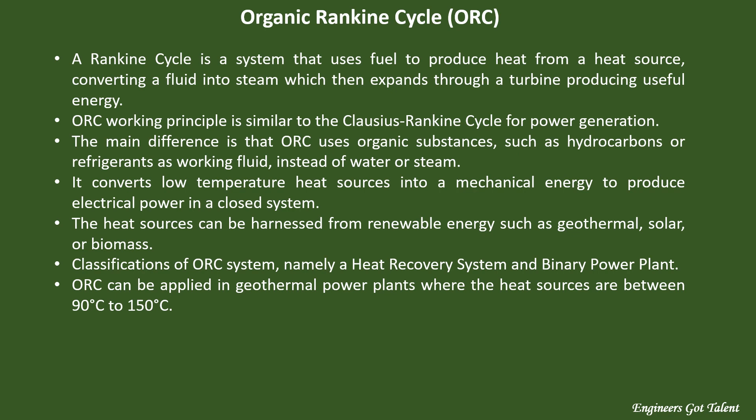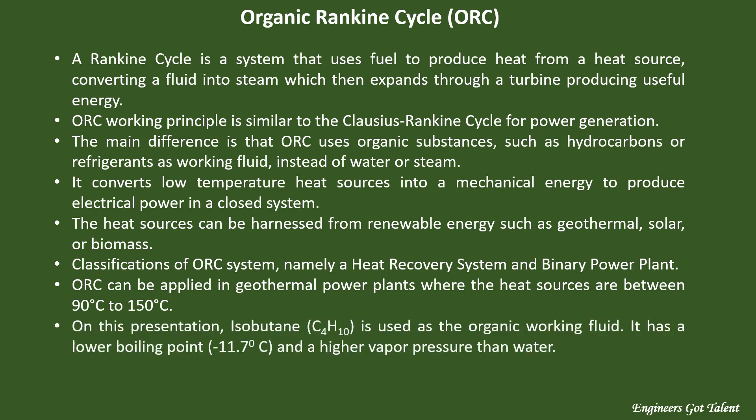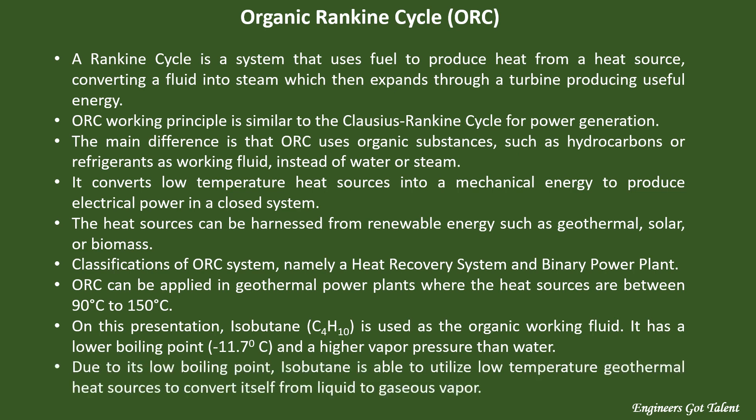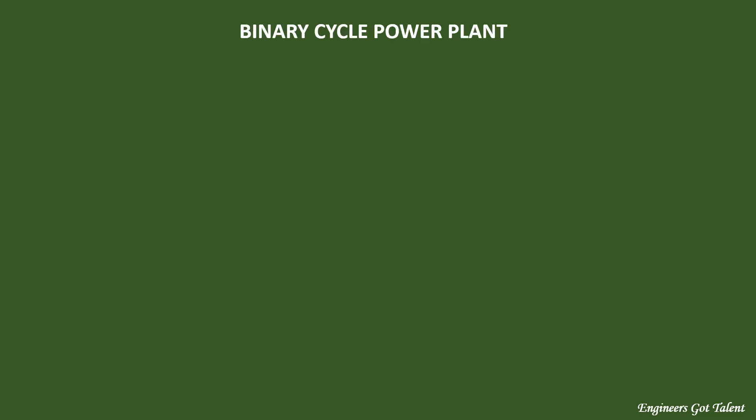ORC can be applied in geothermal power plants when the heat sources are between 90 degrees Celsius to 150 degrees Celsius. In this presentation, isobutane with a chemical formula of C4H10 is used as the organic working fluid. It has a lower boiling point of only minus 11.7 degrees Celsius and a higher vapor pressure than water. Due to its low boiling point, isobutane is able to utilize low-temperature geothermal heat sources to convert itself from liquid to gaseous vapor.